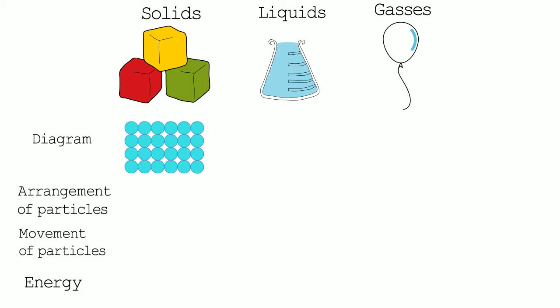With solids, the particles are arranged close together and in a regular pattern. This means that solids have a fixed shape and cannot flow. The particles cannot move but they do vibrate around their fixed position. The energy of the particles in a solid are low relative to the other two states.